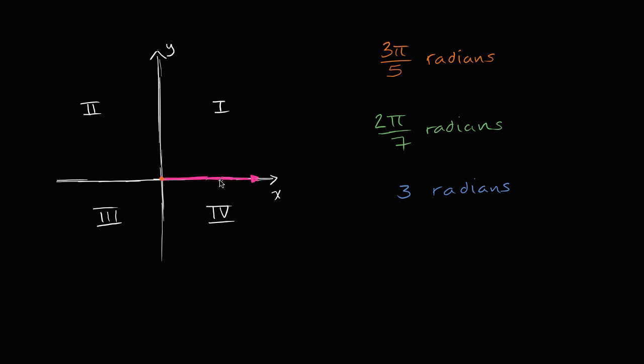So we're going to start with this magenta ray and we're going to rotate it around the origin counterclockwise by different angle measures and think about what quadrant do we fall into. If we start with this and we were to rotate counterclockwise by three pi over five radians, and then if we start with this and we were to rotate counterclockwise by two pi over seven radians, or if we were to start with this and then rotate counterclockwise by three radians. So I encourage you to pause the video and think about starting with this, if we were to rotate counterclockwise by each of these, what quadrant are we going to end up in?